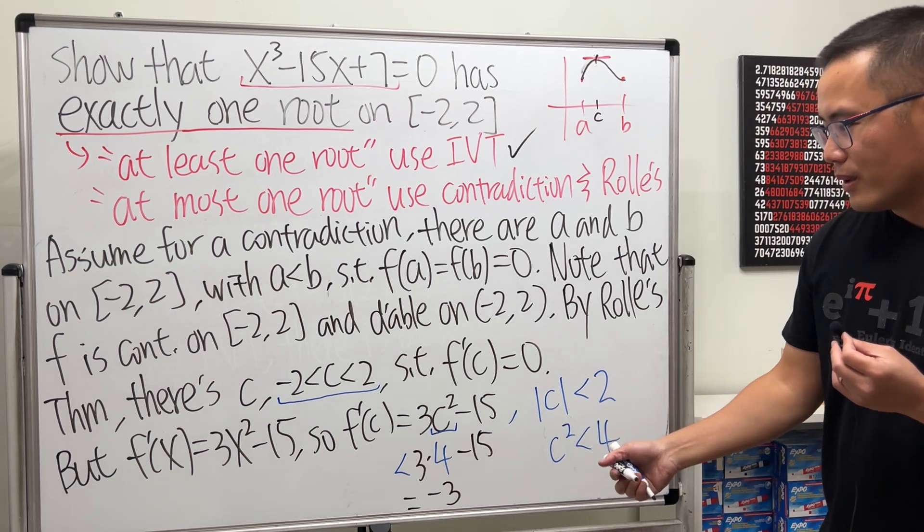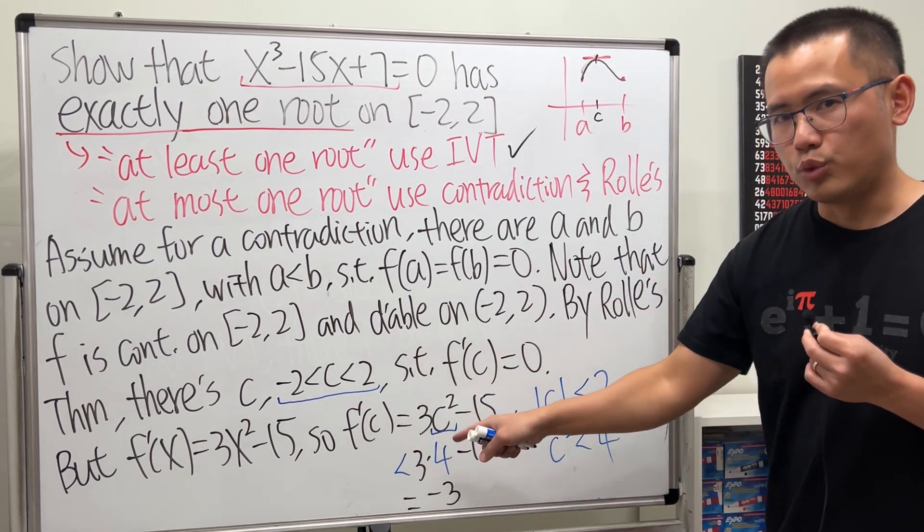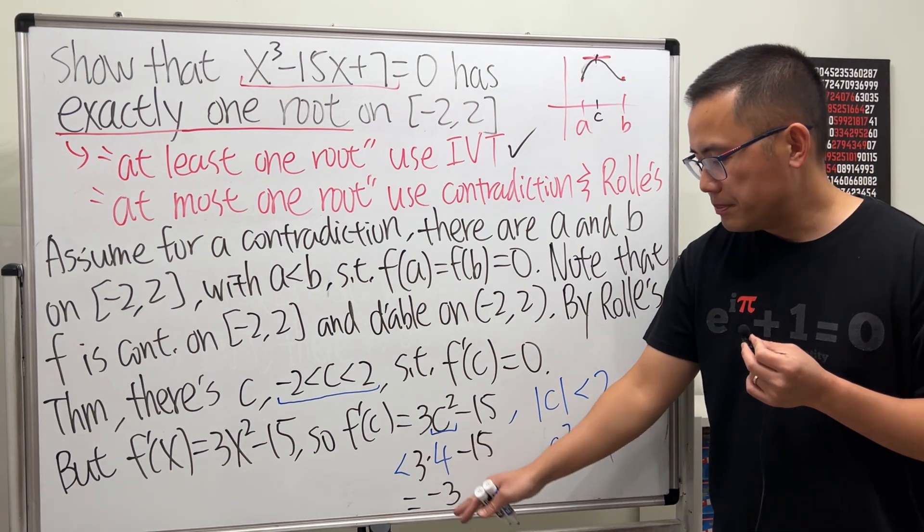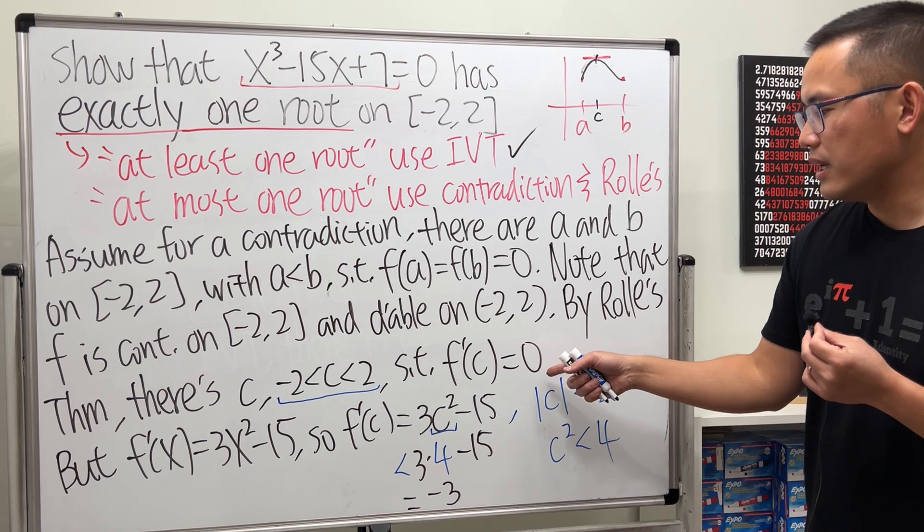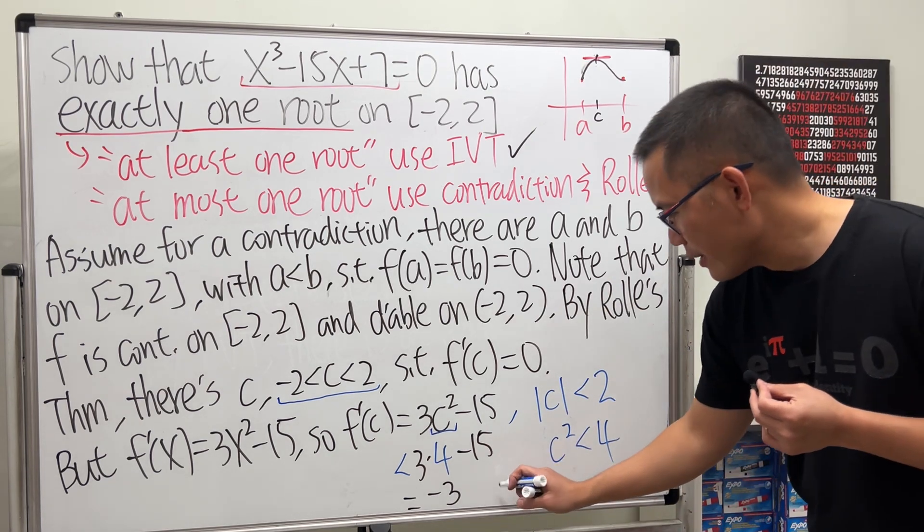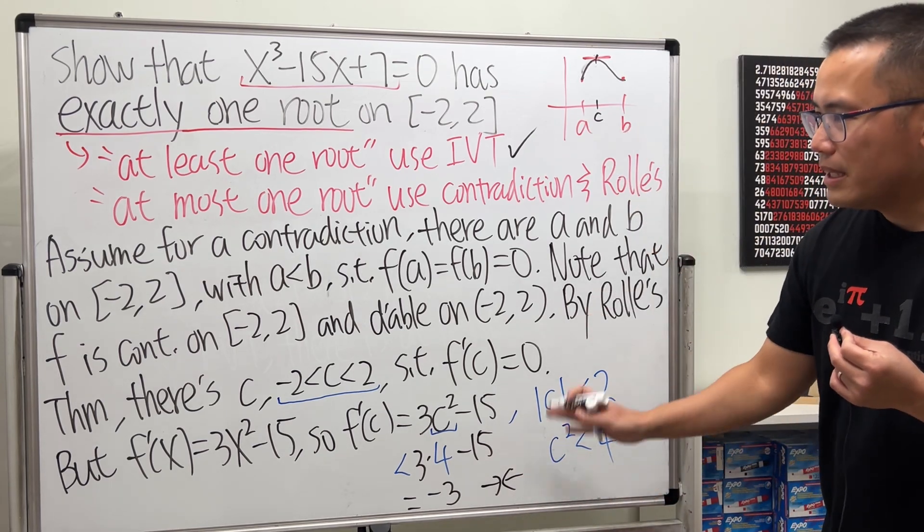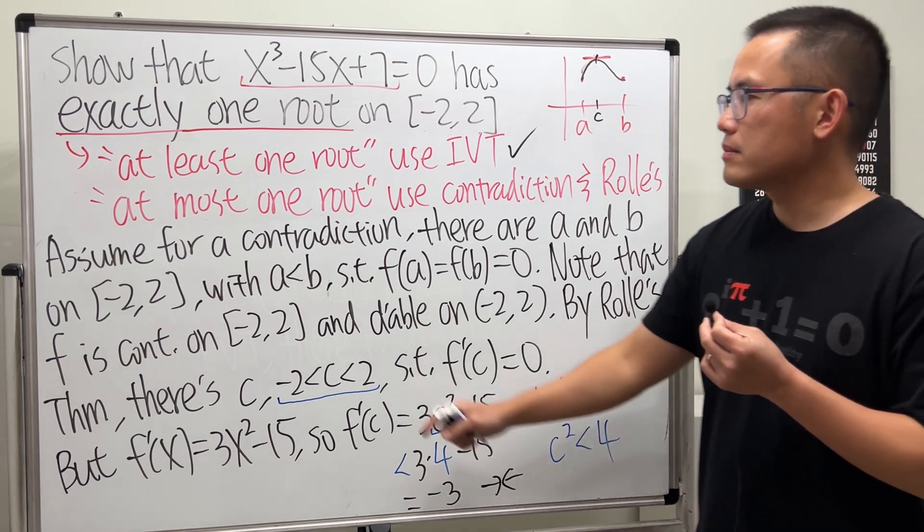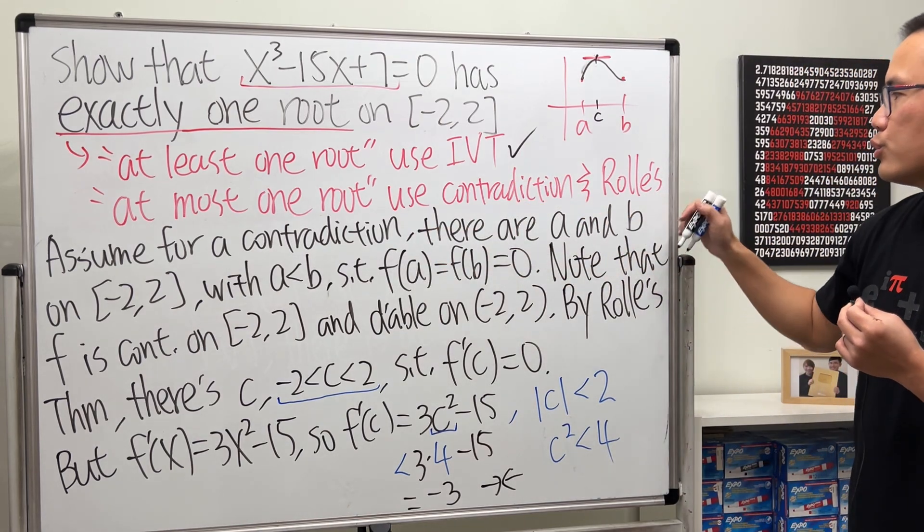It's not possible. You see, f prime of c, no matter what you plug in into the derivative, the derivative will be less than negative 3. There's no way for us to get zero for the derivative. So at the end, right here, we have the contradiction. So that means we have successfully showed that there is at most one root by using contradiction and also Rolle's Theorem.